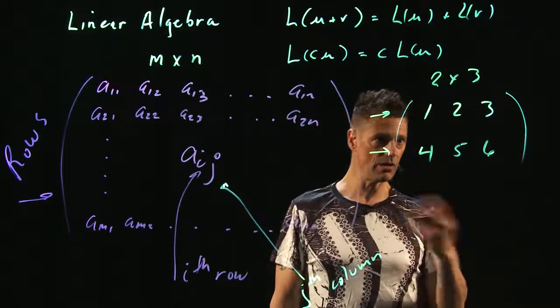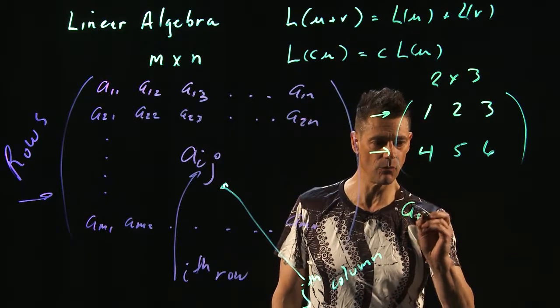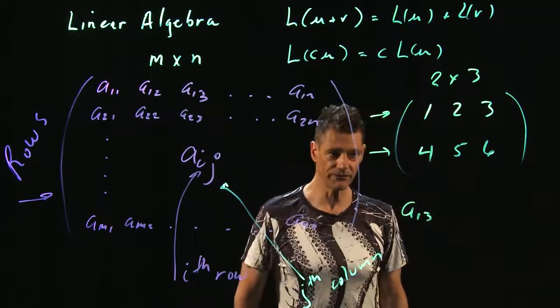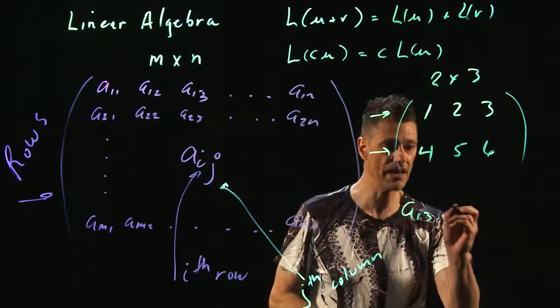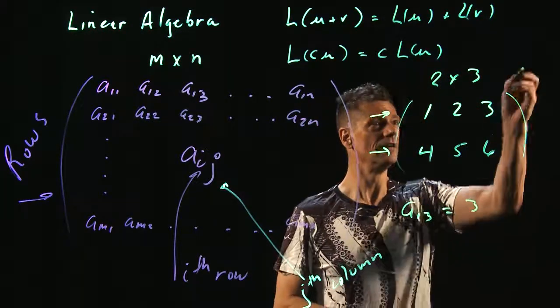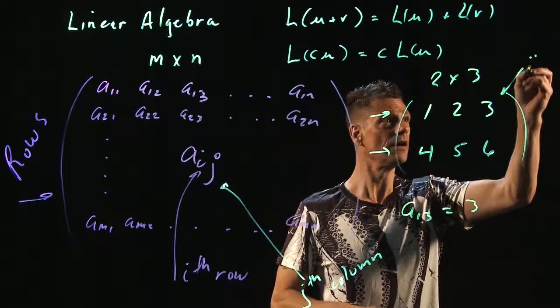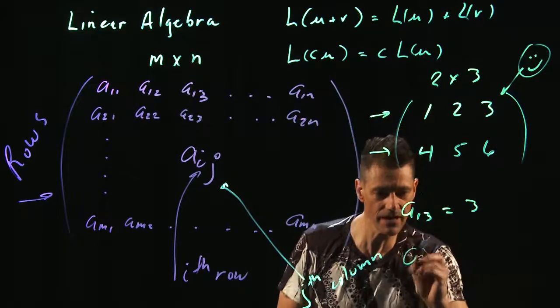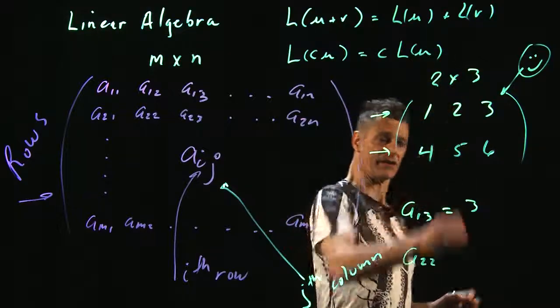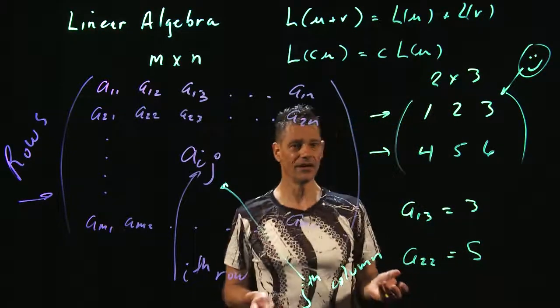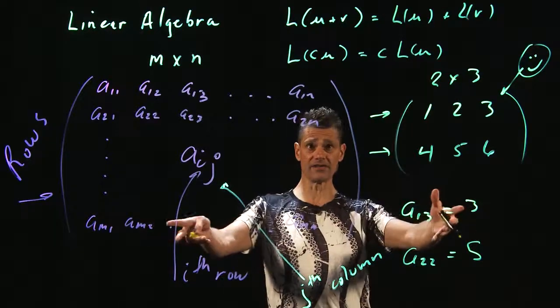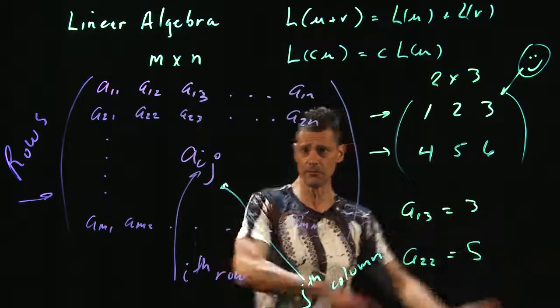What character is sitting in A13? Well, to figure this out, you go to the first row and then you go to the third column. A13 is three. What about A22? Well, we go to the second row, the second column. This is five. It's pretty simple. This board needs to be changed over, so we'll be right back.